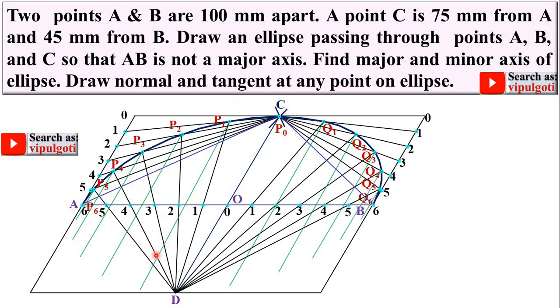Draw the lines which are parallel to this CD line and must pass through this P1, P2, P3, P4, P5. Similarly over here Q1, Q2, Q3, Q4 and Q5. So that you can do with the help of the roller scale.